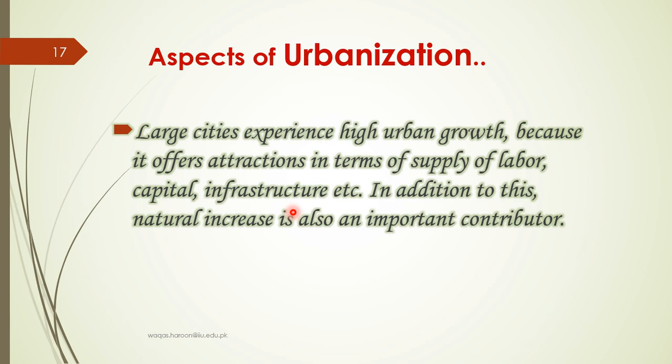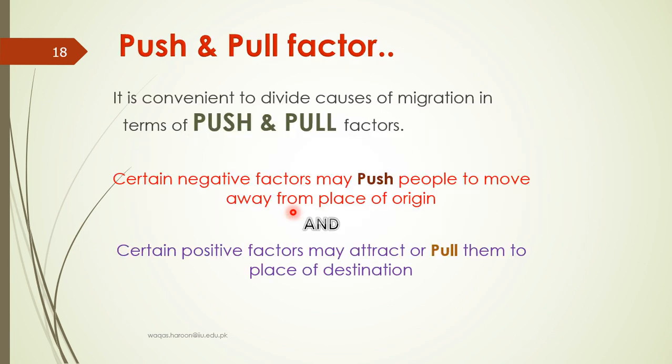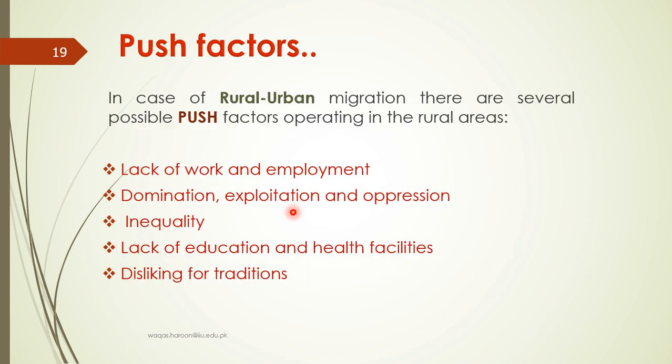Rural-to-urban movement is happening. It is convenient to divide the causes of migration in terms of push and pull factors. Push refers to those things which force you to leave a place, and pull refers to those things which attract you towards cities.